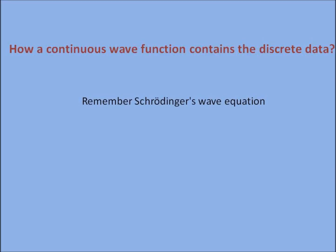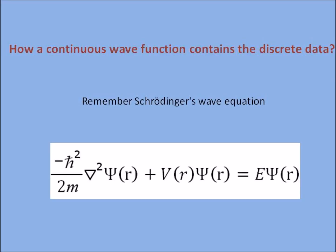Remember Schrödinger's wave equation. This equation tells that the psi is wave function and kinetic energy plus potential energy gives the total energy E. Here is the discreteness. Psi must be continuous but the energy is not continuous.